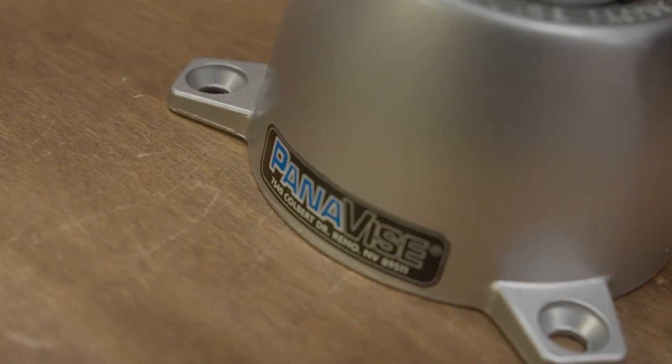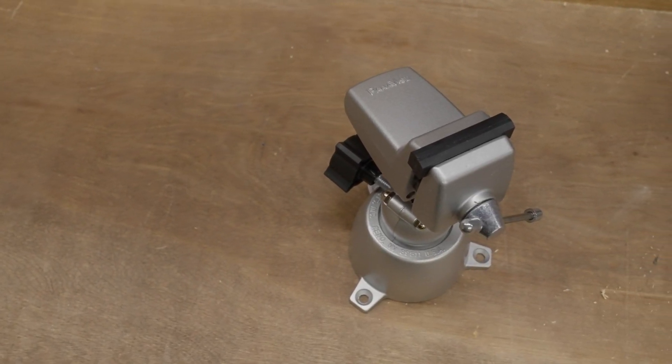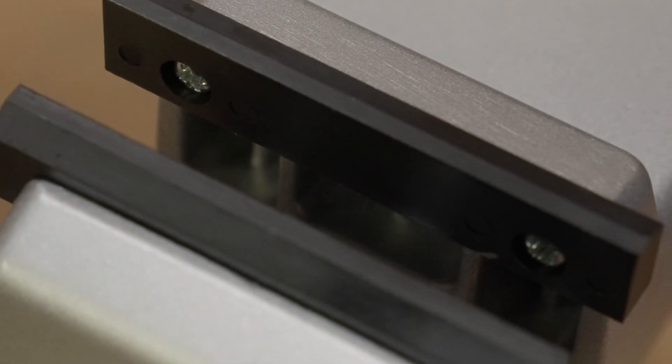This is the Panavice Model 301 that I picked up from Pentool Co. It's a small vise that makes working on different projects so much easier. The nylon jaws ensure that my material is protected and gives electrical insulation.